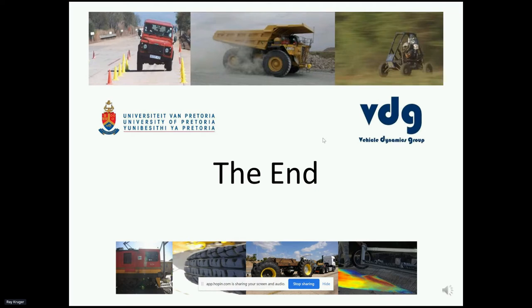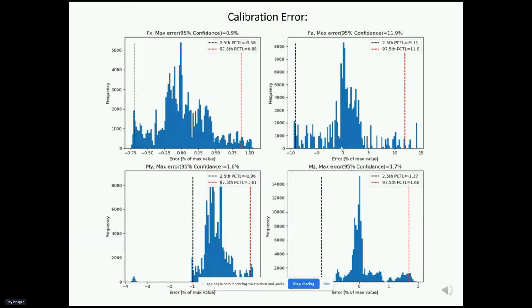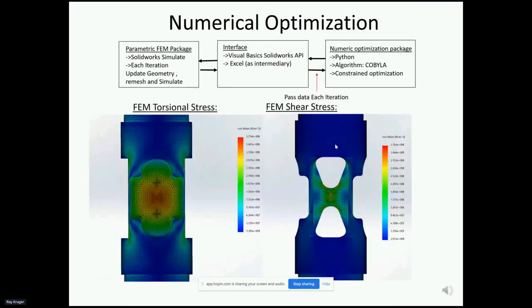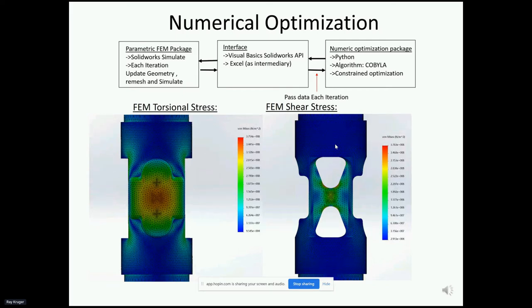Ray clarifies further: by using a secondary S-type load cell inline with the carriage, accurate results can be obtained in all directions rather than making a single-load-cell compromise. This offloads the vertical force measurement to a dedicated sensor, allowing the custom load cell to be optimized exclusively for shear, bending, and torsion.